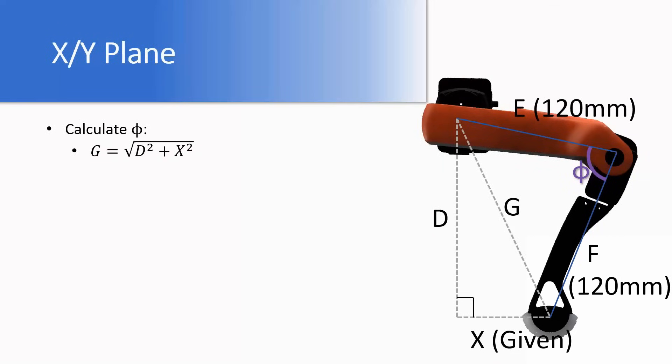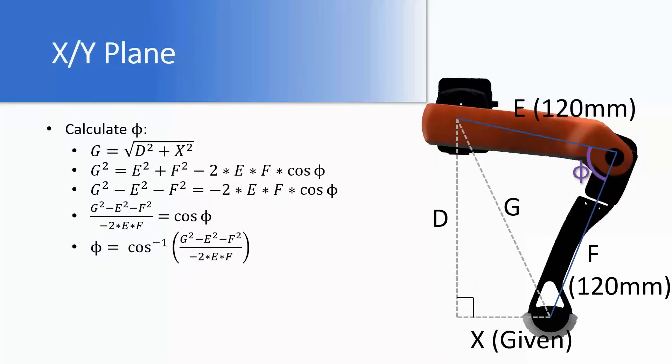To calculate phi, we first have to calculate G using the Pythagorean theorem as the square root of D squared plus X squared. We can then calculate phi using the law of cosines as G squared equals E squared plus F squared minus 2EF cosine of phi. Which can be factored to phi equals the inverse cosine of G squared minus E squared minus F squared over negative 2EF. This can be further simplified to phi equals the inverse cosine of G squared minus 28,800 over negative 28,800.